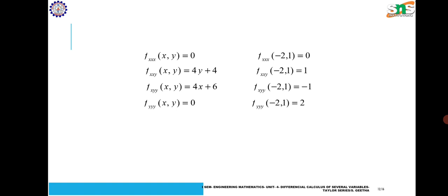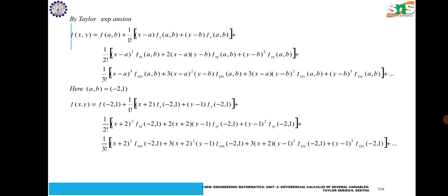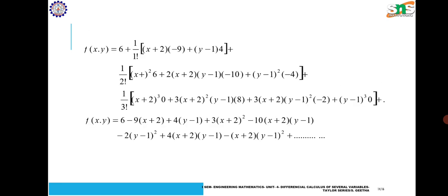Finding the second-order and third-order derivatives and evaluating at (−2, 1), we get values: 0, 1, −1, and 2. Using the Taylor expansion formula and substituting these values, we get: f(x, y) = 6 − 9(x + 2) + 4(y − 1) + (1/2!)[3(x + 2)² − 10(x + 2)(y − 1) − 2(y − 1)²] + (1/3!)[4(x + 2)(y − 1) − (x + 2)(y − 1)²] + etc.